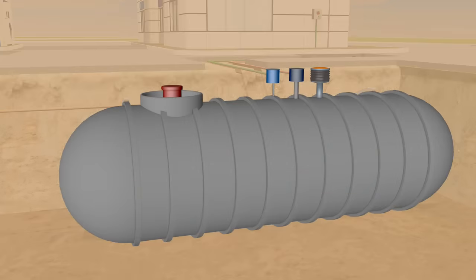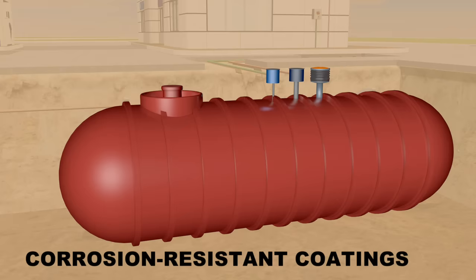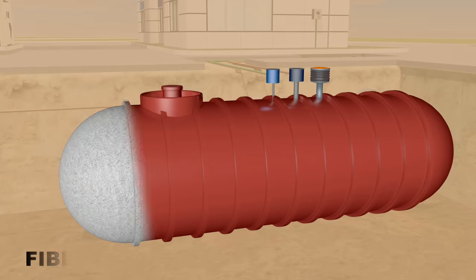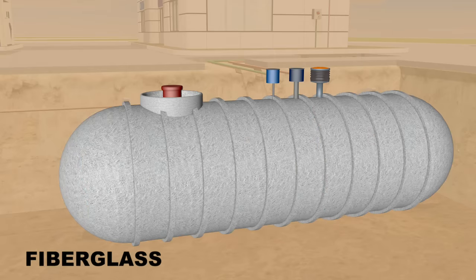Thanks to a nationwide upgrade campaign, the vast majority of underground storage tanks and pipes feature corrosion-resistant coatings, or they're made entirely of resistant materials, like fiberglass.